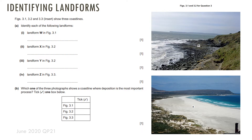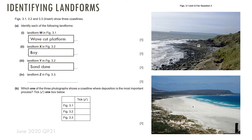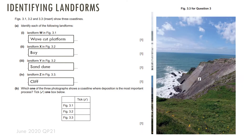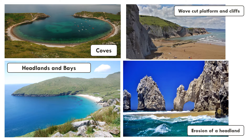Typically the questions start off with you identifying landforms. You've got landforms W, X, Y and Z to identify. Which of the three photographs shows a coastline where deposition is the most important feature? The top two are formed by erosion and only landform Y, figure 3.2, is formed by deposition. Most coastal photograph interpretation questions require you to identify landforms, and these are the main ones that you need to know.